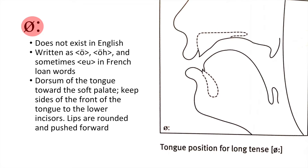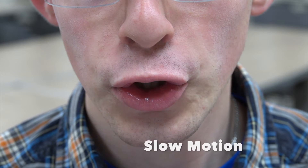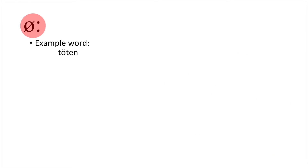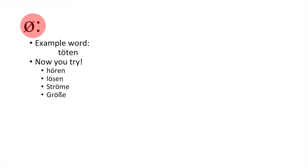Our next sound is ö (ur). This sound does not exist in English. This sound can be produced by raising the dorsum of the tongue toward the soft palate, while keeping the sides of the front of the tongue to the lower incisors. During this process, the lips are rounded and pushed forward. Here is an example word. Practice words: Hören, hören, lösen, lösen, ströme, ströme, größe, größe.